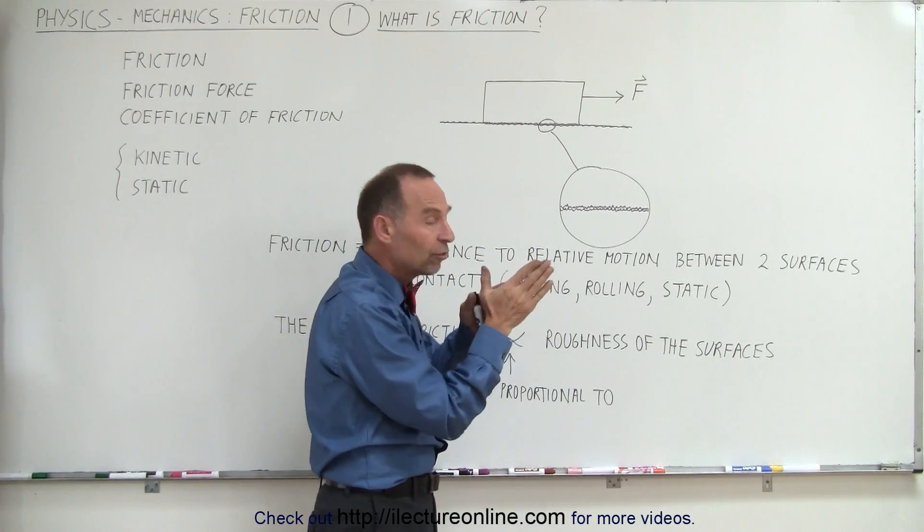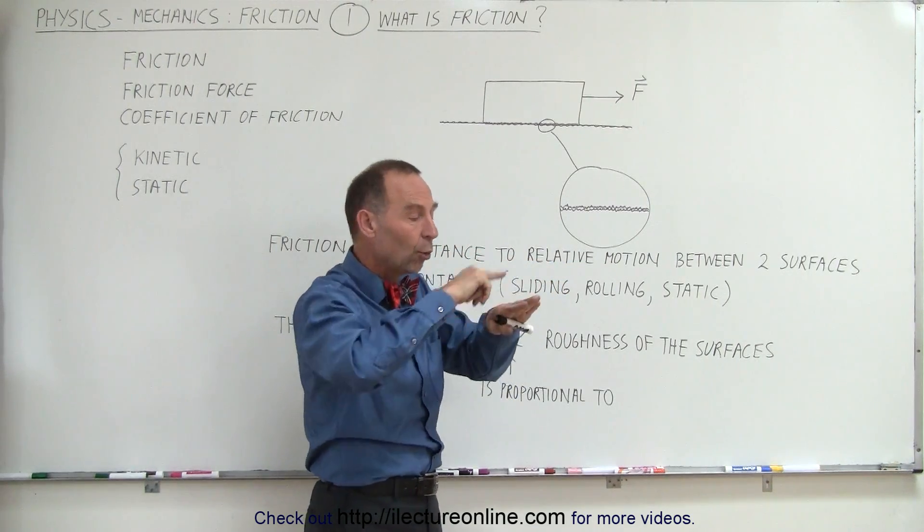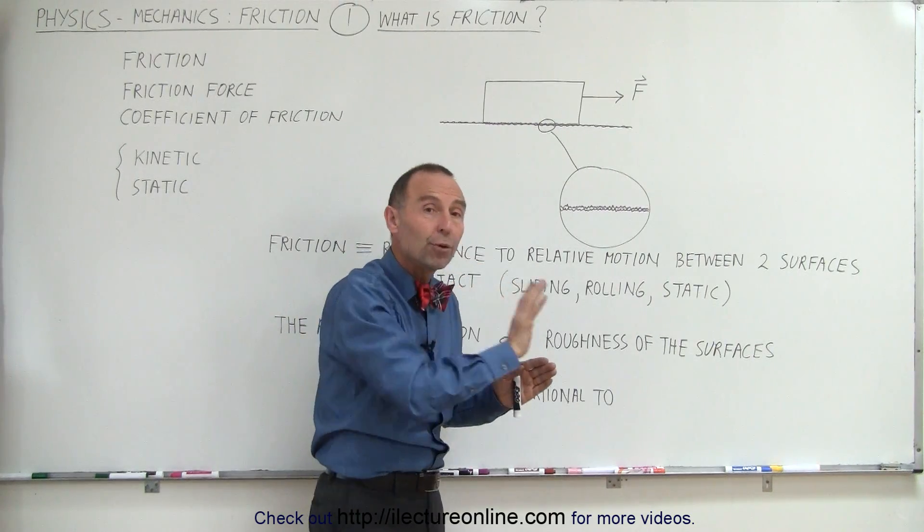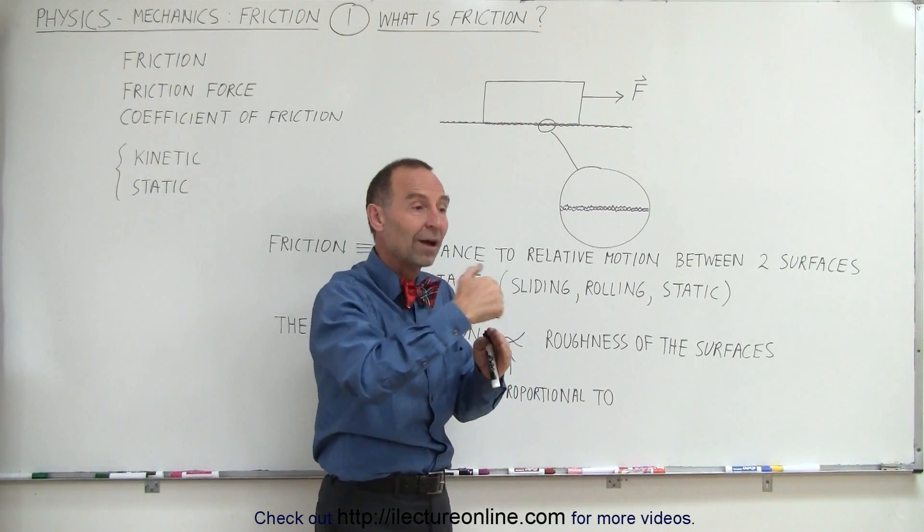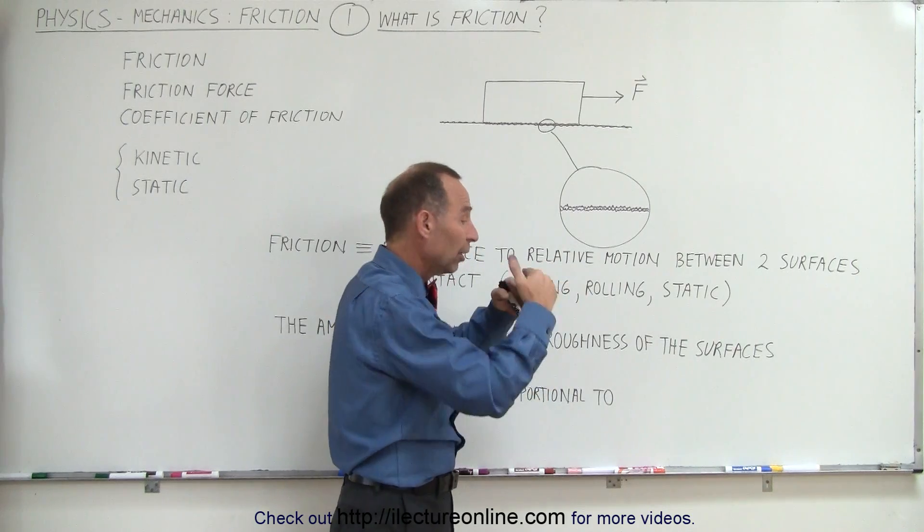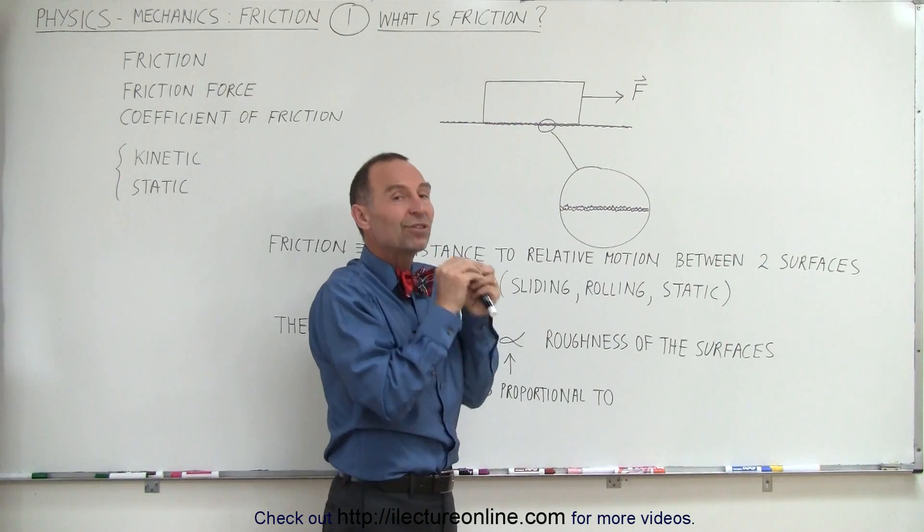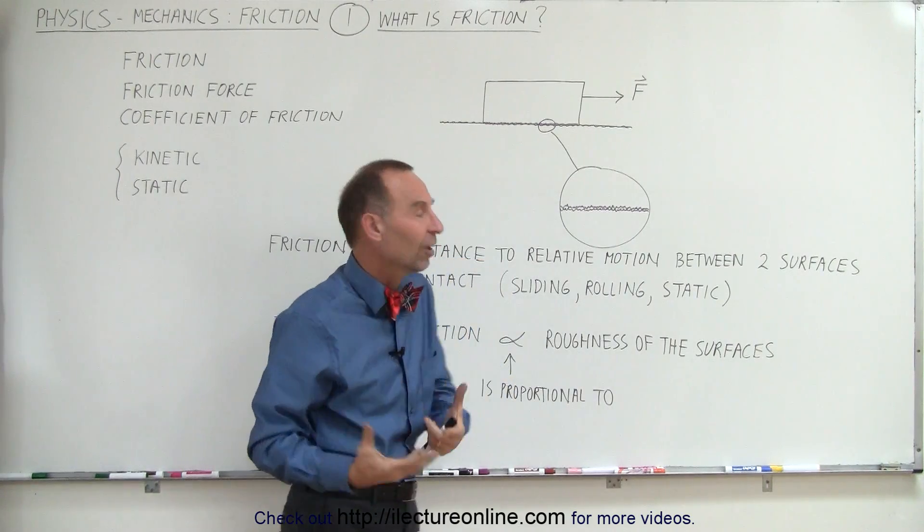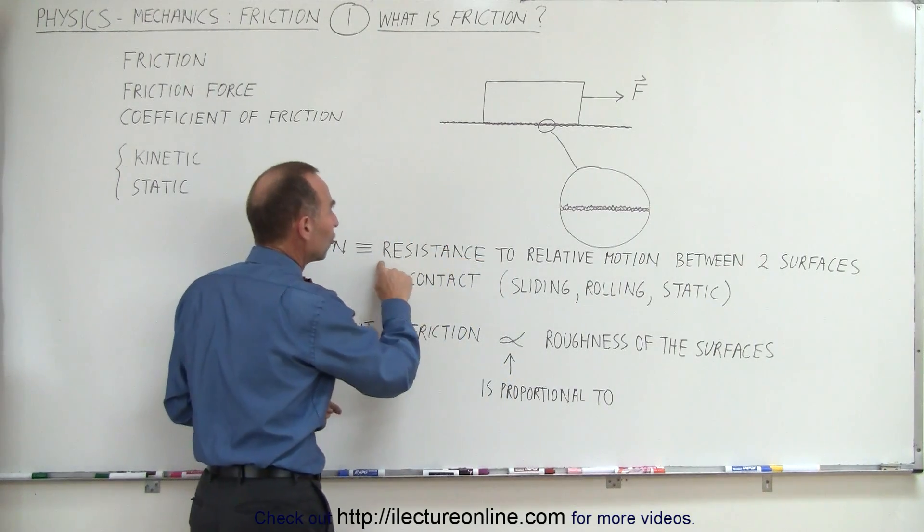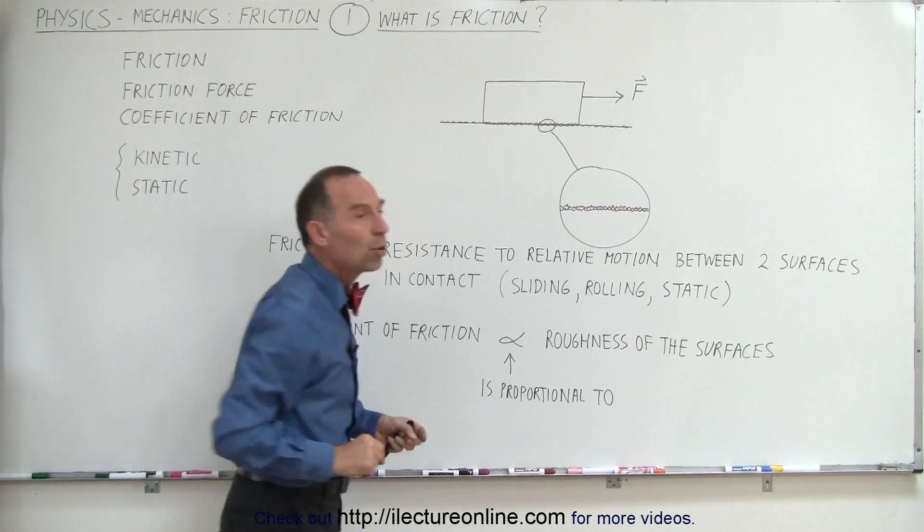So when those two surfaces slide over one another, or one rolls over another, or you try to push against one of the surfaces to make it move relative to the other, those uneven portions of the surface cause it to be more difficult for that motion to exist. That's why we talk about resistance to that relative motion.